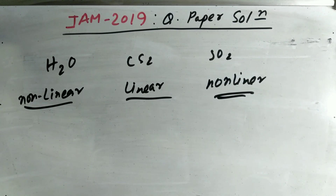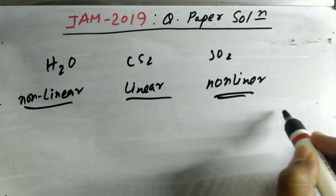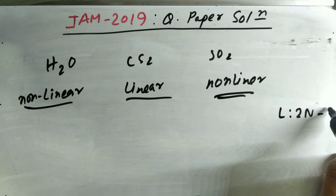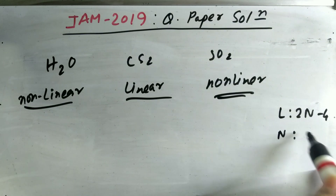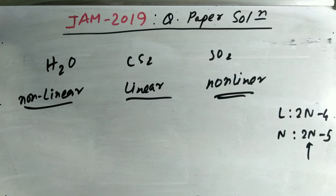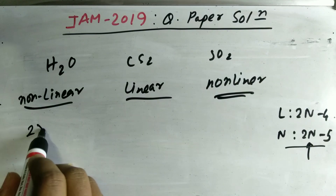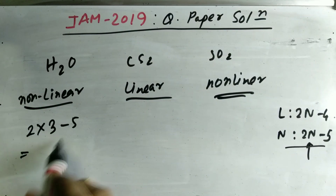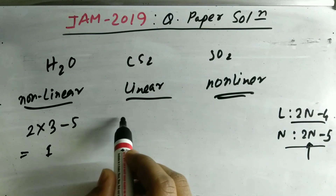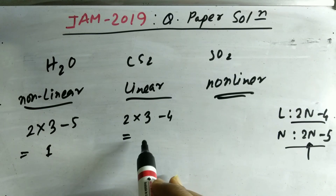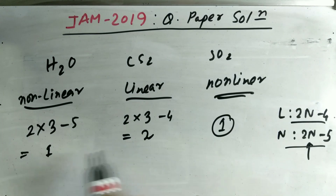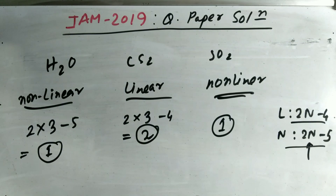To determine the number of bending modes of vibration: for linear molecules the formula is 2n - 4, and for non-linear molecules it is 2n - 5, where n is the total number of atoms. H₂O is non-linear with n = 3: 2(3) - 5 = 1. CS₂ is linear with n = 3: 2(3) - 4 = 2. SO₂ is non-linear: 2(3) - 5 = 1. So the answers are 1, 2, and 1.